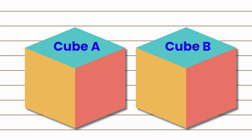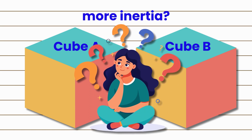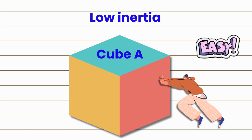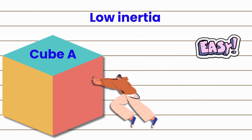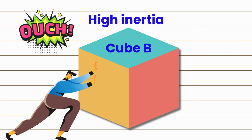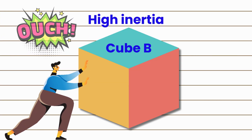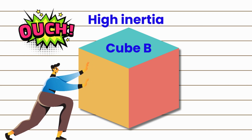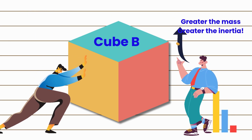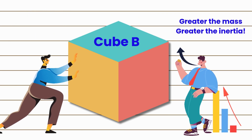There are two identical looking cubes on the floor. How can we tell which has more inertia? Gently push or slide both cubes across the floor. The cube that is harder to move, which means it requires more force to get moving, has more inertia, indicating greater mass.